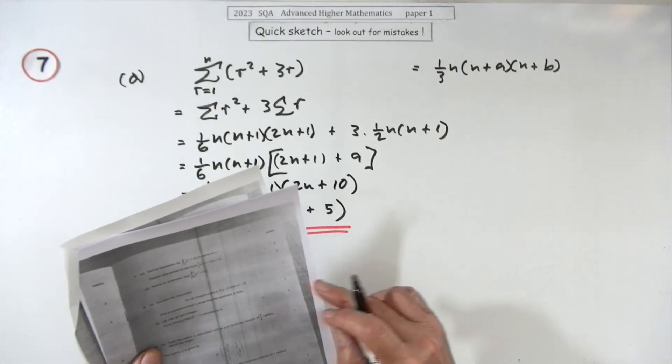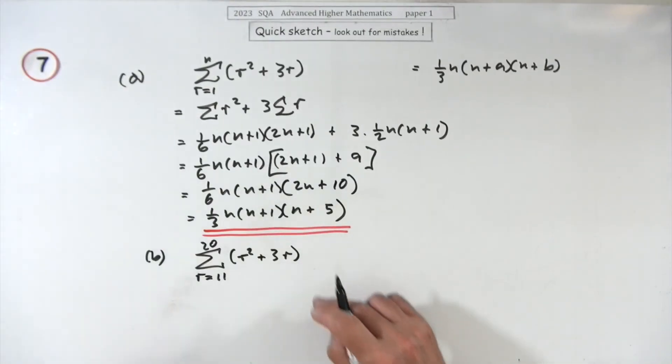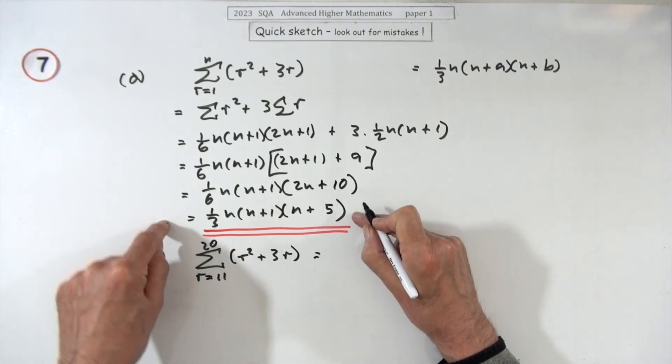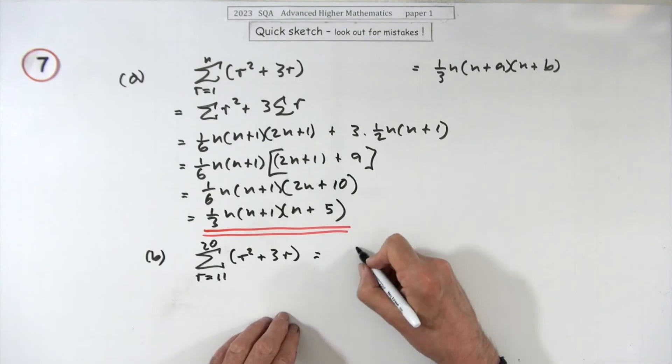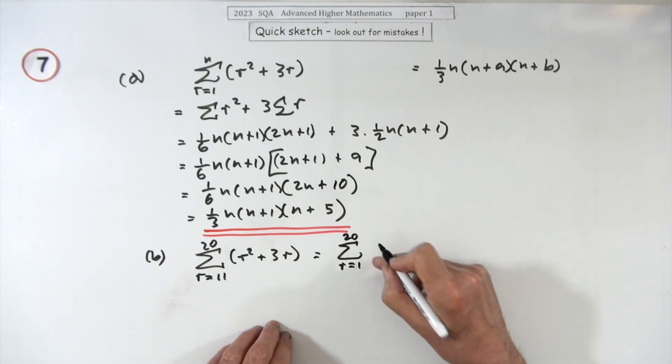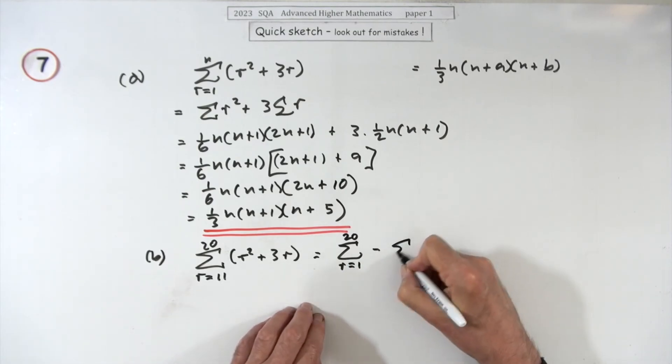Then in part b for two marks, hence or otherwise find the value of this summation, r going from 11 to 20. Well you've only got a formula that goes from one to whatever, so what you could do is you find it from r equals one to 20, I'll not put this bit in now, and from that subtract what you had going from one up to 10. That'll leave the 11 to 20 part.